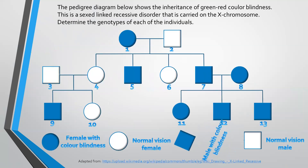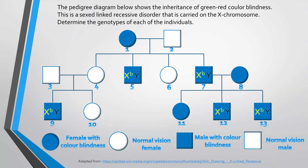Starting with colorblind males: number five, being male, has Y and X with small letter B. The same applies to number seven, number nine, number 12, and number 13 — all have the recessive allele with Y. The males with normal vision have X capital B with Y, and that's number two and number three. At this point, we've identified the genotypes of all males in the pedigree diagram.